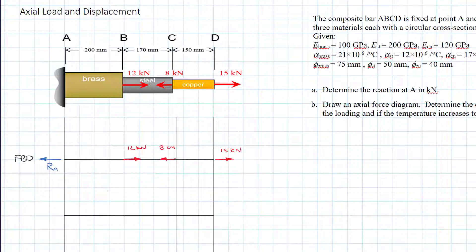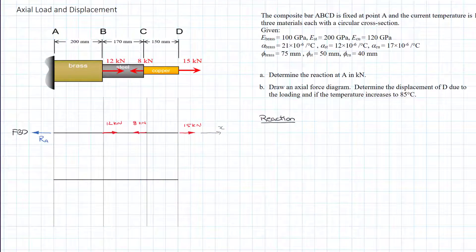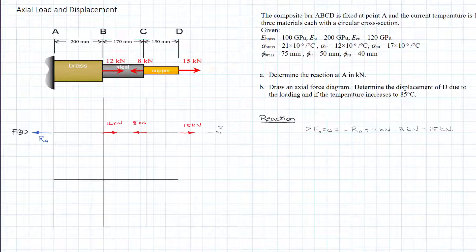With our coordinate system showing X to the right, let's get our reactions. There's only one, so we have one equation of static equilibrium: the sum of forces in the X direction equals zero. Working left to right, we have negative RA plus 12 kilonewtons, minus 8 kilonewtons, plus 15 kilonewtons. Running the math, we get RA equal to 19 kilonewtons — so we guessed the direction correctly.